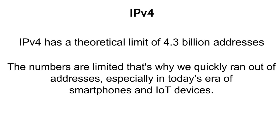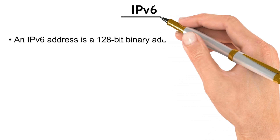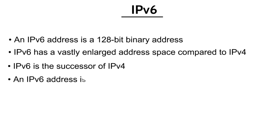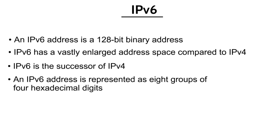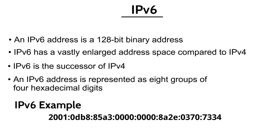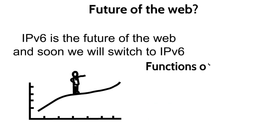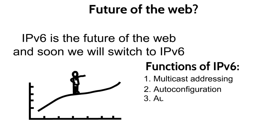IPv4 has a theoretical limit of 4.3 billion addresses. The numbers are limited, which is why we quickly ran out of addresses, especially in today's era of smartphones and IoT devices. IPv6 is a 128-bit address and is the successor to IPv4, with a vastly enlarged address space. IPv6 addresses are represented as 8 groups of 4 hexadecimal digits — alphanumeric and hexadecimal — as you can see on the screen. IPv6 features include multicast addressing, auto-configuration, and improved security compared to IPv4.